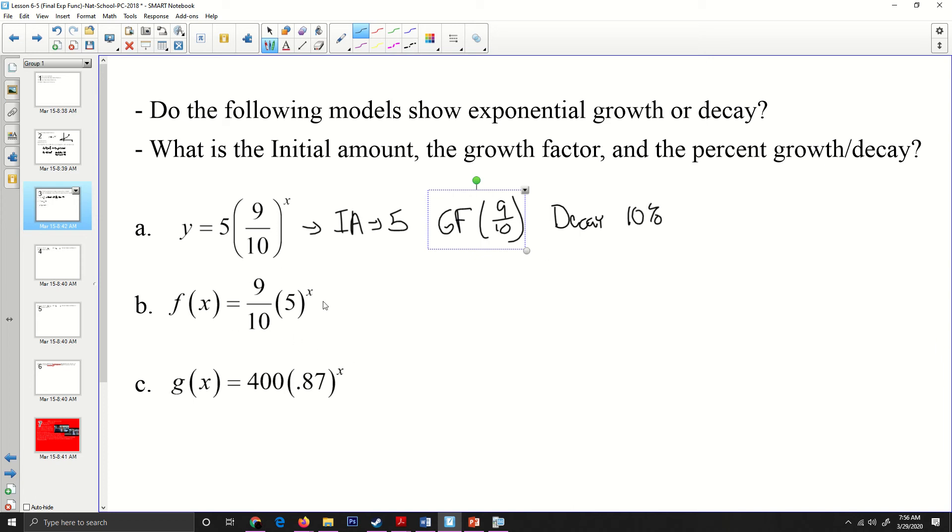So we look at this one. And this one, my initial amount is going to be the nine tenths. My growth factor is going to be five. And when I go one minus five, I get four this time. Four is positive.